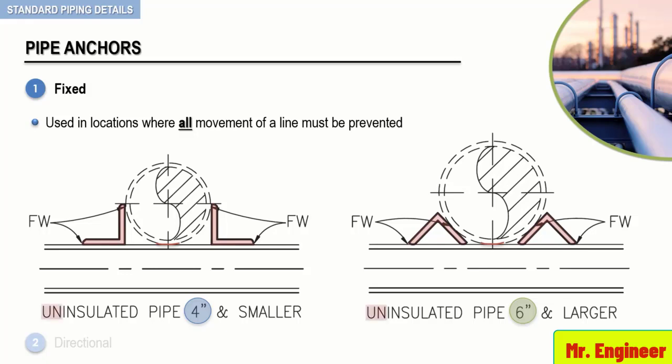Now, if the pipe to be anchored is insulated, then a pipe shoe is attached to the structural support. Pipe shoes will be covered in detail in the next video.